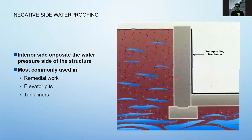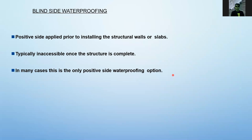Blind side waterproofing is the positive side applied prior to installing the structural walls or slab — it covers areas of the building that cannot be accessed after the building has been erected. In many cases, this is the only positive side waterproofing option. A common example is the plastic membrane waterproofing laid on the foundation before pouring concrete, which is a thick plastic that prevents water from penetrating the ground floor tiles.